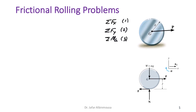The unknowns are f, N, α, and a_G. To get the fourth relation, we can assume the rigid body is rolling without slipping.